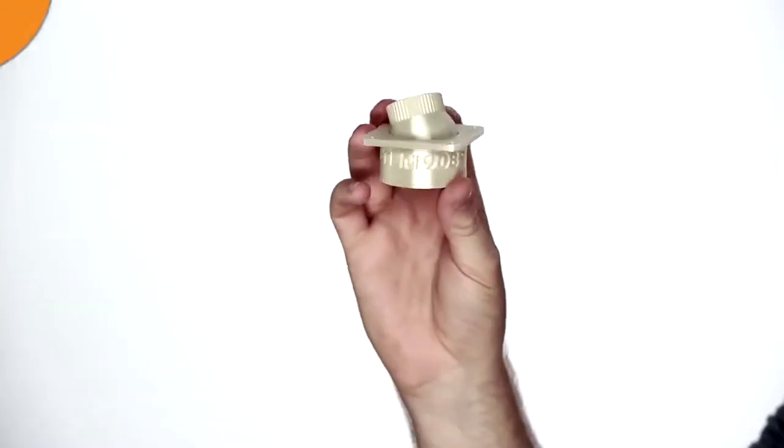The Ultem 9085 material features an IZOD notched impact of 106 joules per meter and also a heat deflection temperature of 153 degrees C. So this material is really ideal for producing high end prototypes that can be functionally tested as well as special parts that can be used in the actual production process whether it's aerospace, automotive or defense.